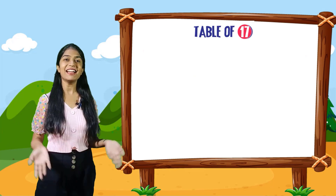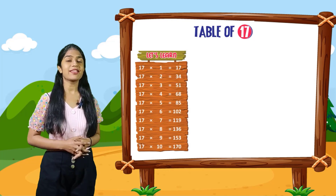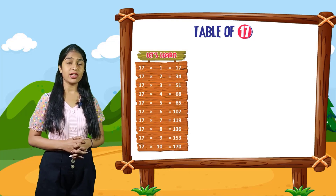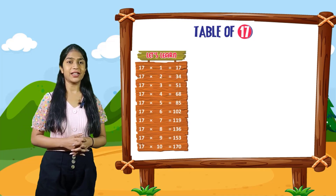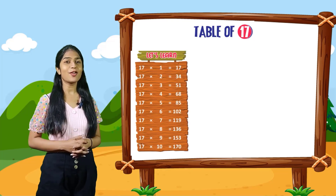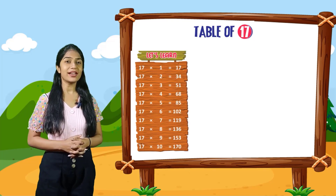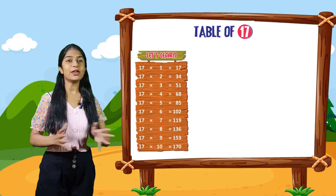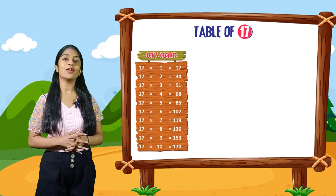So kids, now we will do the table of 17. Let's learn. 17 into 1 is equal to 17. 17 into 2 is equal to 34. 17 into 3 is equal to 51. 17 into 4 is equal to 68. 17 into 5 is equal to 85. 17 into 6 is equal to 102. 17 into 7 is equal to 119. 17 into 8 is equal to 136. 17 into 9 is equal to 153. 17 into 10 is equal to 170.